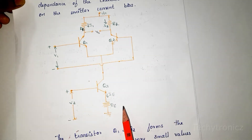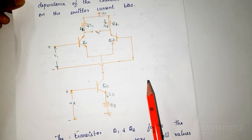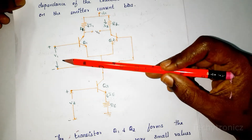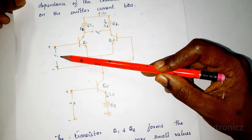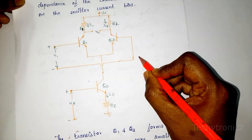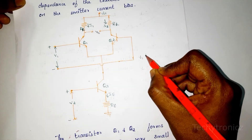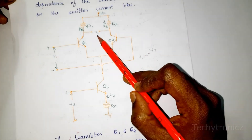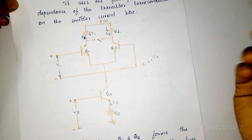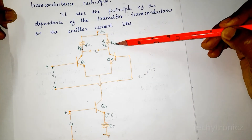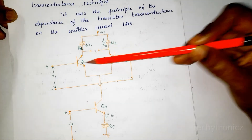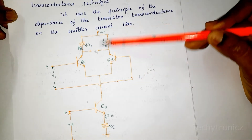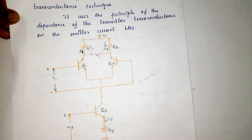This is the circuit diagram of the variable transconductance technique. Transistors Q1 and Q2 form the differential amplifier. The applied differential input voltage V1 is very small — that is, V1 is much less than the thermal voltage Vt. To find the output voltage V0, we consider any one of the transistors, because both transistors have symmetrical characteristics.